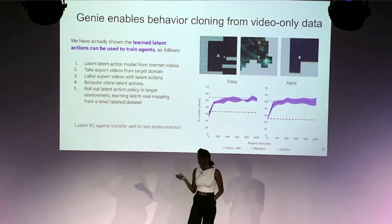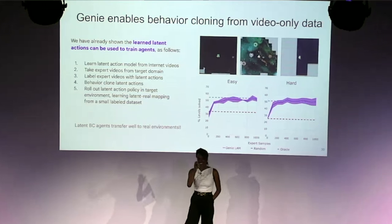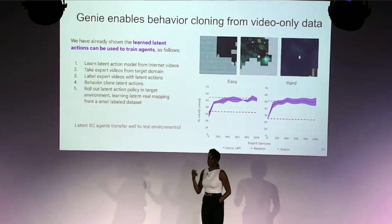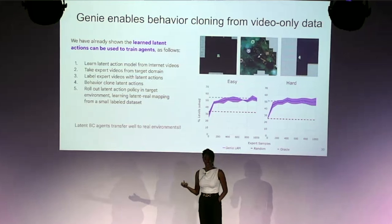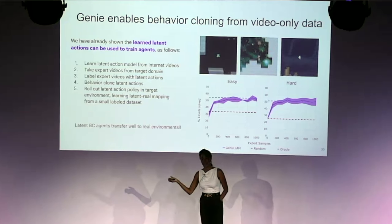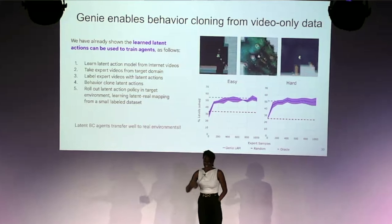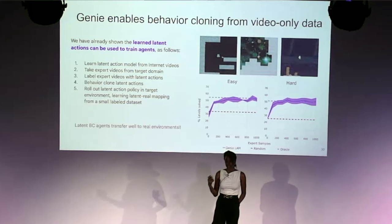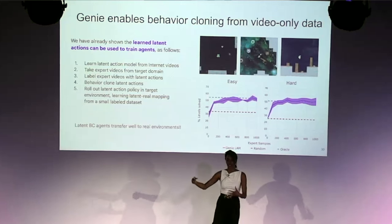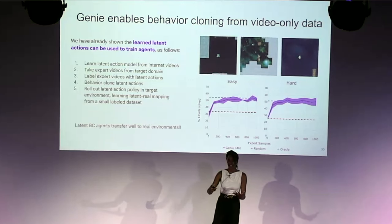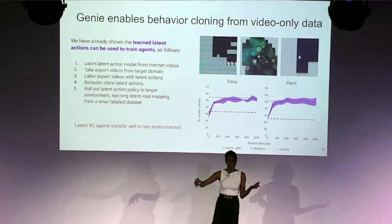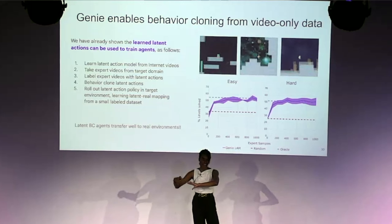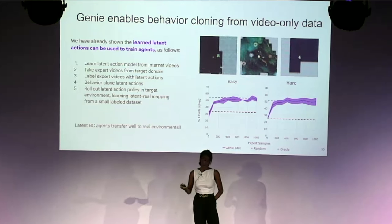Coming back to my reinforcement learning roots: we also used Genie for training agents. Specifically, we took latent actions learned from internet videos and used them to label sequences of observations from previously unseen videos, then trained an agent to imitate that behavior. This is similar to VPT but uses latent actions instead of real actions. Using these video-derived latent actions for behavioral cloning, we were able to get pretty good performance on environments never seen during training.